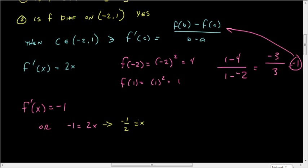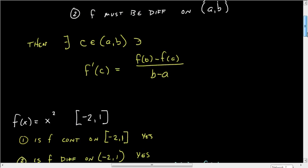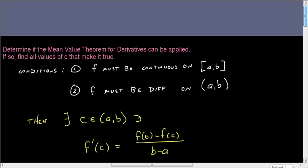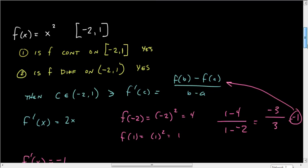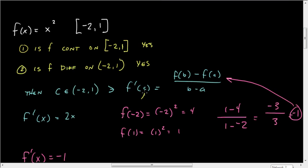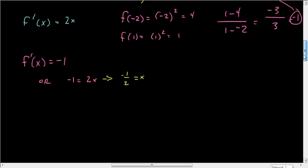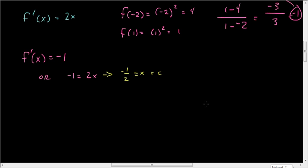So in the question, the question read, find all values of C that make it true. And of course, we're dealing with C here, which means that this is really C. So C is equal to -1/2. That's it.